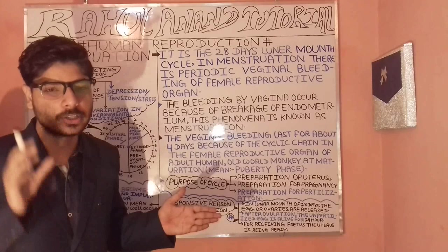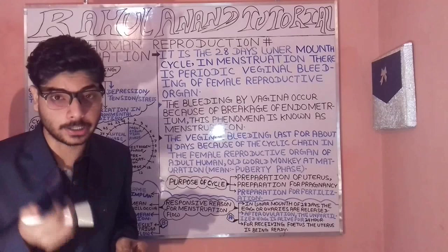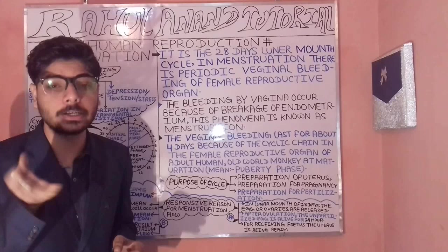Menstruation is the 28-day lunar month cycle. In menstruation, vaginal bleeding occurs from the female reproductive organs. This bleeding from the vagina is occurring due to the breaking of the endometrium.